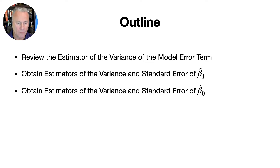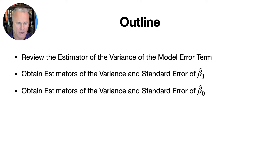Here's an outline of what we'll be looking at in this lecture video. First, we'll review the estimator of the variance of the model error term that we derived in a previous lecture video. We'll then obtain estimators of the variance and standard error of beta 1 hat, and finally obtain estimators of the variance and standard error of beta 0 hat, using the estimator of the variance of the model error term.